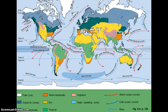What we're looking at in this map are the surface currents. You can see those that originate around the equator are in red — those are our warm currents. And those that originate closer to the poles are in blue — those are our cold currents.